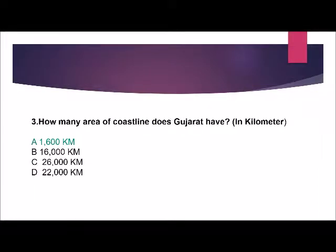Question number 3: How many kilometers of coastline does Gujarat have? Remember, it's in kilometers — they ask in kilometers. Options are: 1,600 kilometers, 16,000 kilometers, 26,000 kilometers, or 22,000 kilometers. The correct answer is 1,600 kilometers.